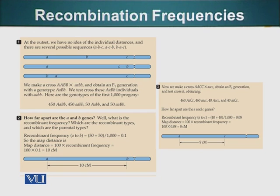First of all, we look at the recombinant frequencies between A and B genes. Here we have the data. So during this cross, we got 450 Aa Bb and 450 aa bb. These are the parental phenotypes.